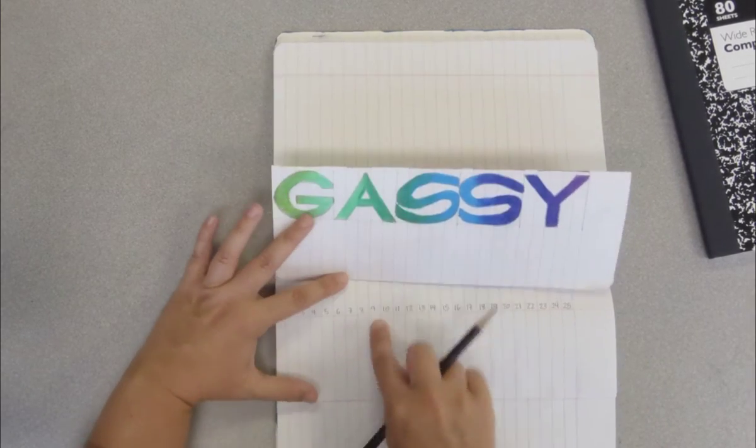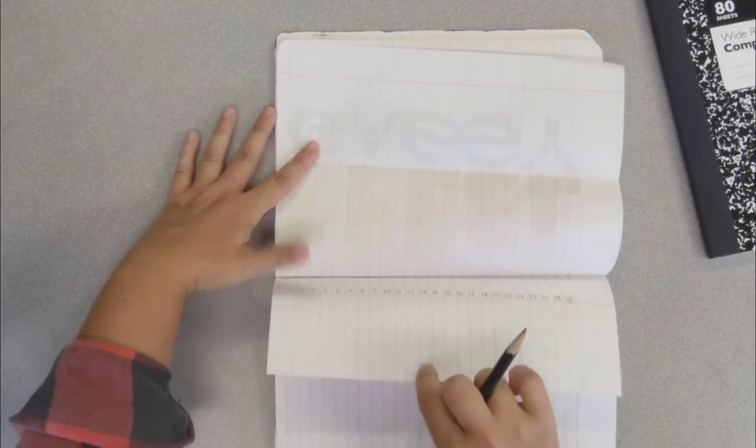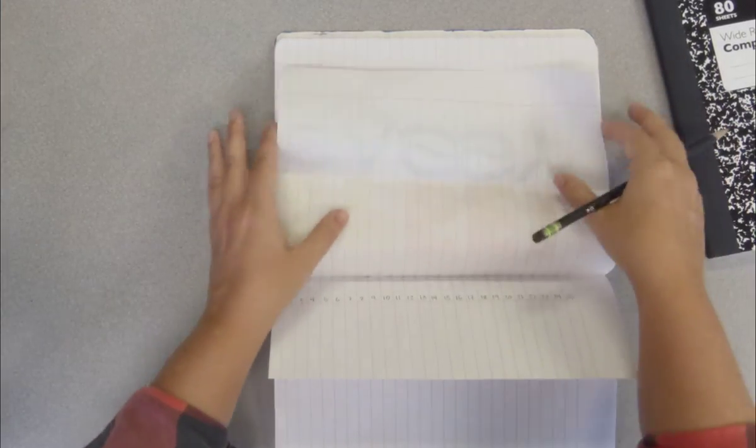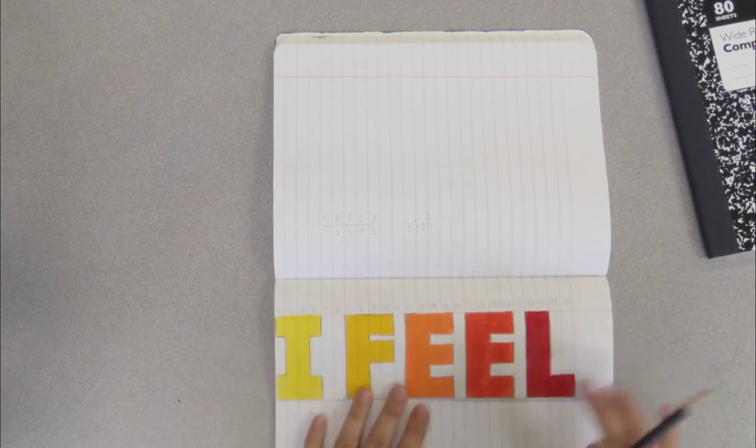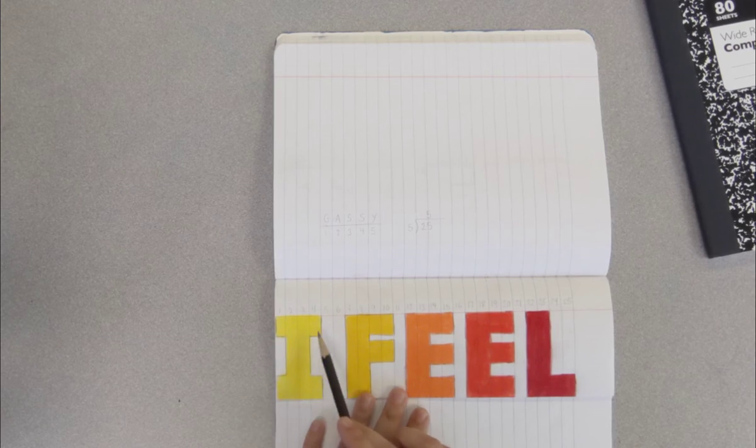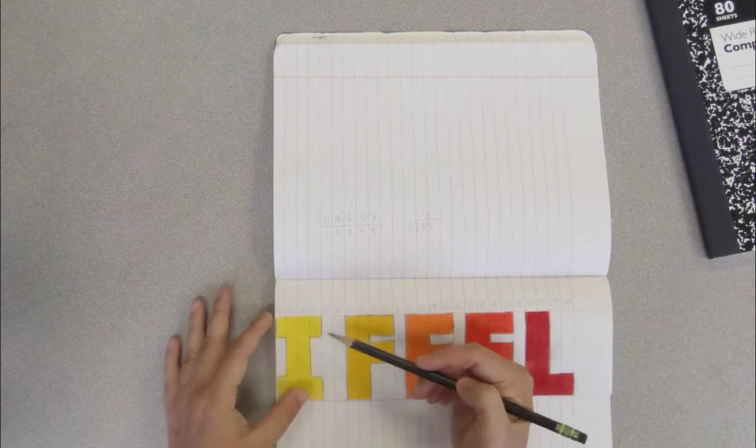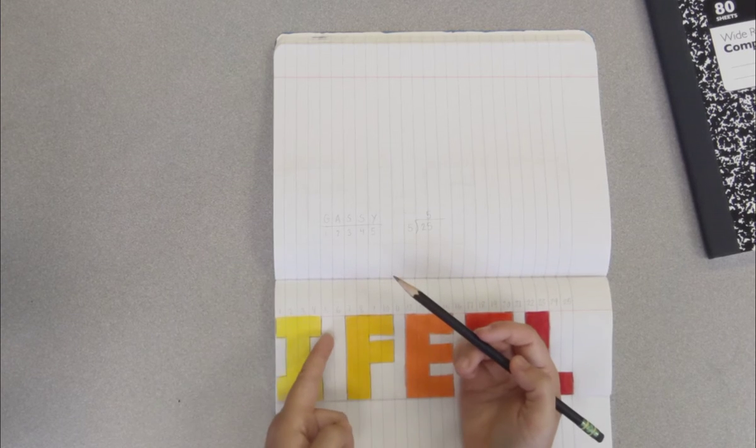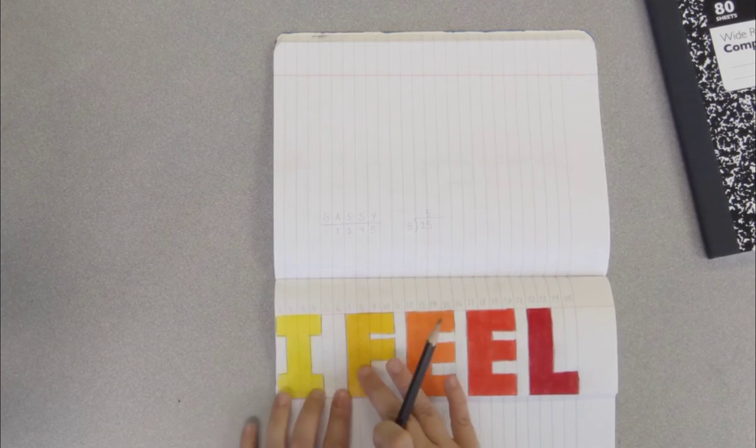Our height is already determined by the space that we have between this red line here and the bottom of the fold. And the width is determined by the lines on your page, so each one of our letters is going to be four lines wide.